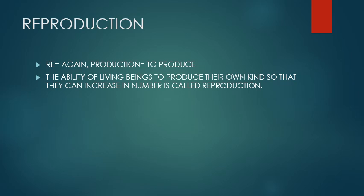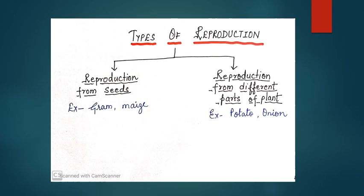They have the ability of producing or we can say reproducing the young ones of their own kind. And this process is called reproduction. If we split the word reproduction we will find re and production. Re means again and production means to produce. So the definition becomes the ability of living beings to produce their own kind so that they can increase in number is called reproduction. The ability to produce same kind is called reproduction.